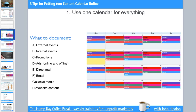Tip one: use one calendar for everything. All too often I'll work with an organization that will have one document for their fundraising events and then an Excel spreadsheet for ads and PR. What I usually recommend is use one calendar for everything. I often recommend Google Calendar for organizations just starting out — it's very flexible and great for developing your process. There are other tools you can look at as well.